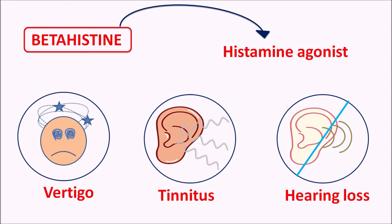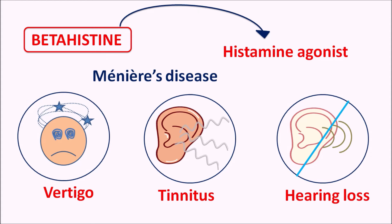Particularly these symptoms are associated with any disorder within the inner ear. For instance, Meniere's disease is an inner ear disorder associated with vertigo, tinnitus, and hearing loss. In such patients, betahistine can be used.